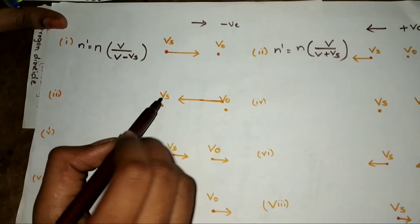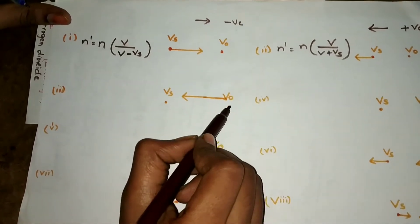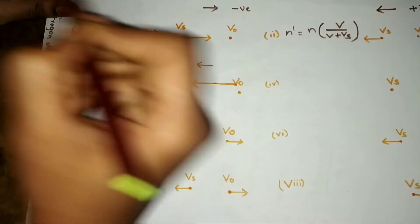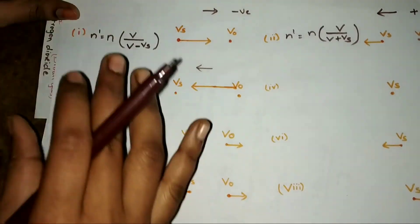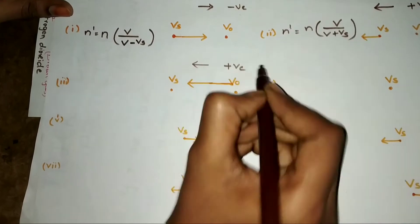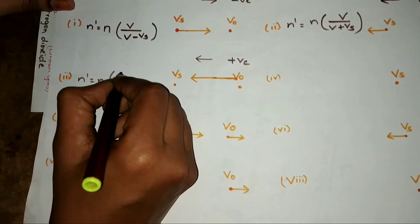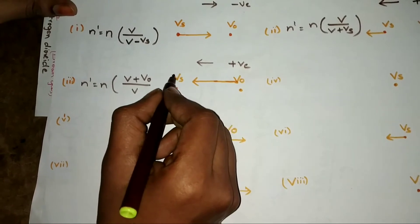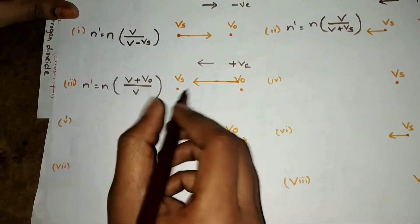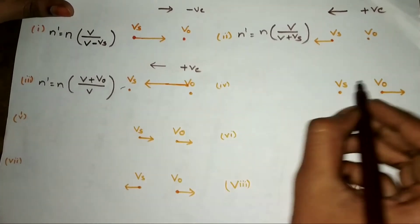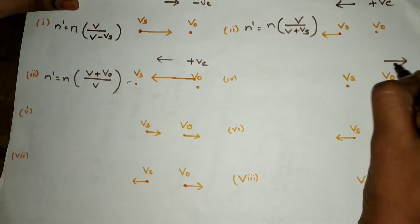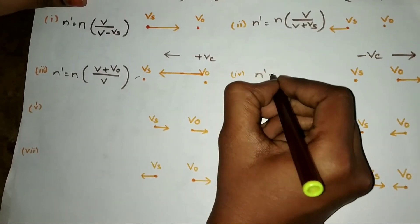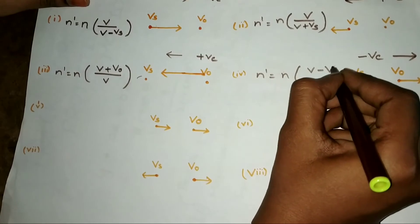Case 3: Source is at rest and observer is moving. Observer moving towards the source is in the negative direction on the number line, but in this trick it is opposite, so take it as positive. N-dash = N × (V + V0) / V. Next, observer moving away from the source is in the positive direction on the number line, but for this trick take it as negative. So N-dash = N × (V − V0) / V.